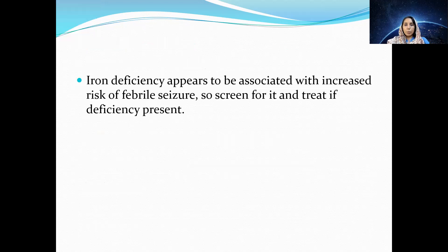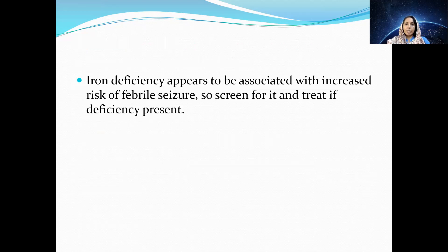Iron deficiency appears to be associated with increased risk of febrile seizures — check hemoglobin and treat iron deficiency if present to help reduce risk. Outcome after initial febrile seizures: 3 to 12 percent develop epilepsy by adolescence. The risk of epilepsy is 1.5 to 2.4 percent after simple febrile seizures, increasing with complex febrile seizures, pre-existing neurodevelopmental abnormality, or family history of epilepsy.